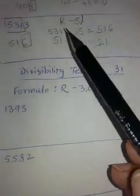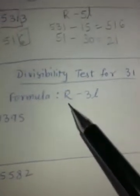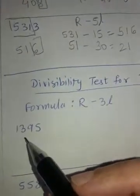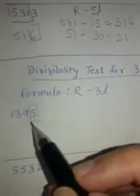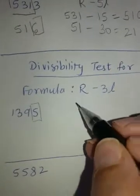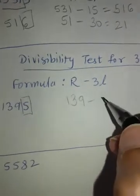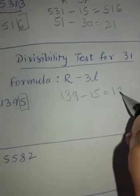Similar is the formula for 31. For 17 formula was R-5L, for 31 formula is R-3L. So let's begin test for 31. Let's keep this 5 aside, remaining number is 139, minus 3L is 3 times 5 is 15, so this is 124.